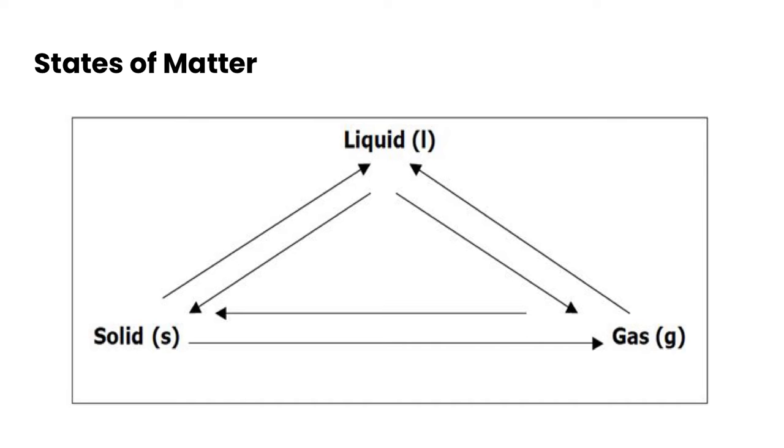Before we get into physical and chemical properties I want to quickly review the different state changes of matter that we have. This should just be review for you. Going from a solid to a liquid is known as melting, and going from a liquid to a solid is freezing.